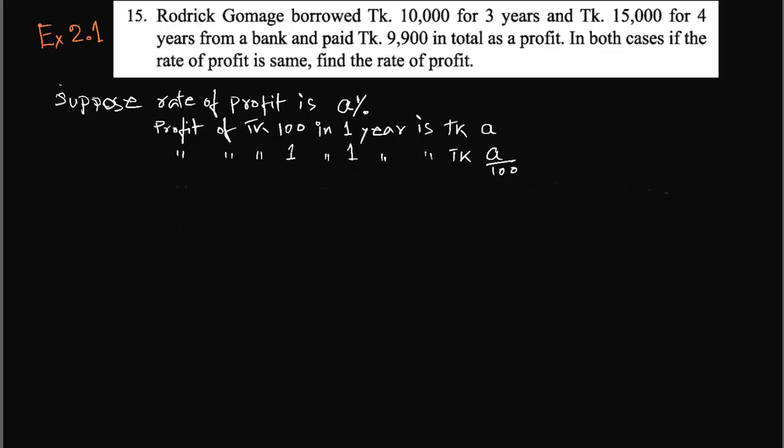Assalamualaikum, greetings from Talent Upskill Class 8 English version Math Exercise 2.1, number 15. Rodrick Gomez borrowed taka 10,000 for three years and taka 15,000 for four years from a bank and paid taka 9,900 in total as a profit. In both cases, if the rate of profit is same, find the rate of profit.